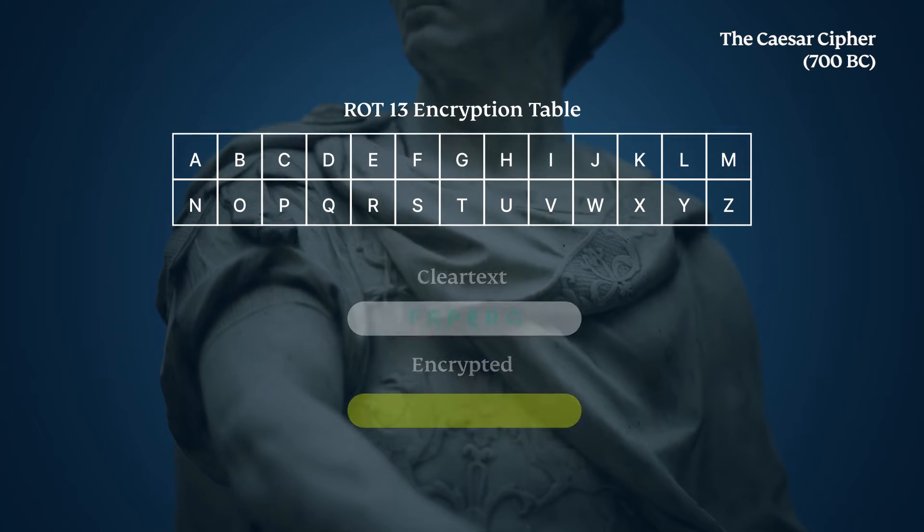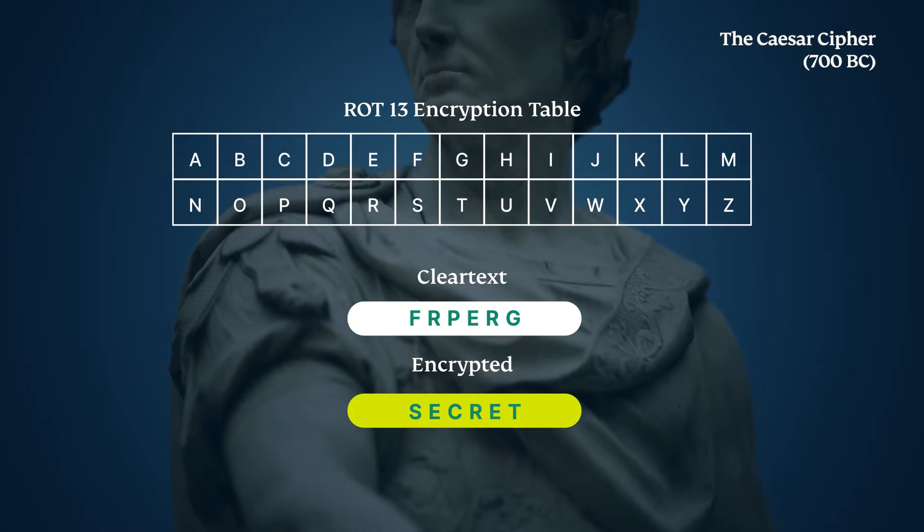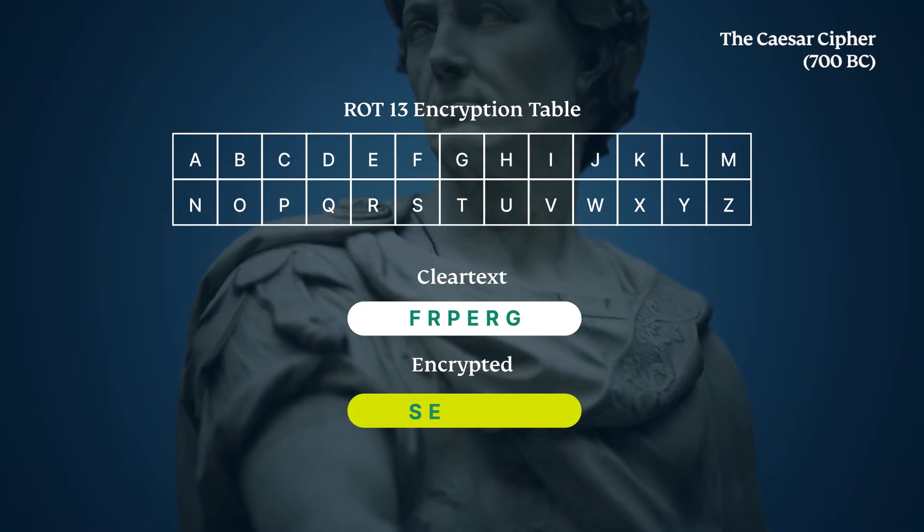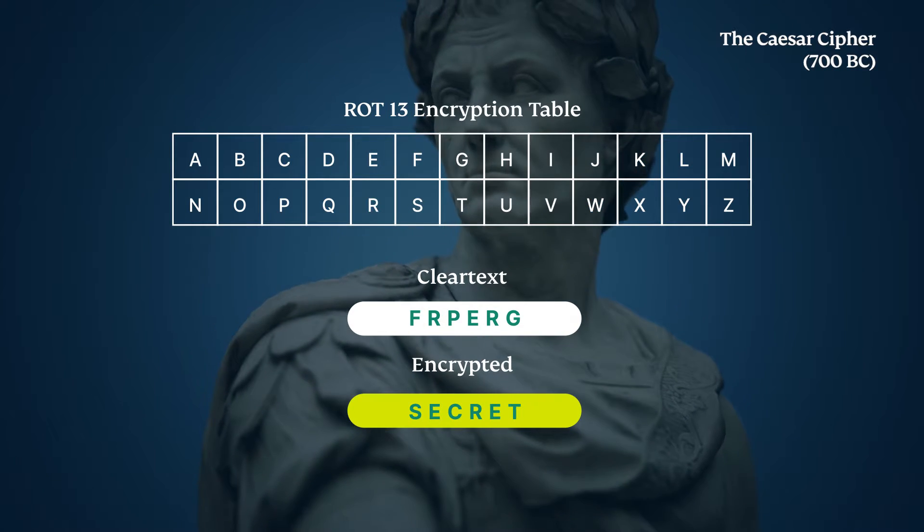Named after Julius Caesar, who used it for private communication, a substitution cipher replaced letters with others a fixed number of spaces away. Despite it being flawed, the Russian army used it in World War I.